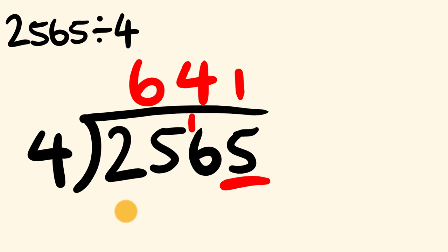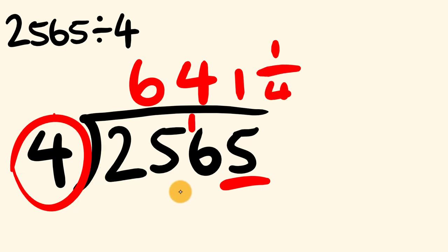So what we could also do is we could get the 1 that we have left over and we divide it by this number here. So we're going to put it over 4. This is also a pretty acceptable answer. We have our answer of 641 and a quarter.